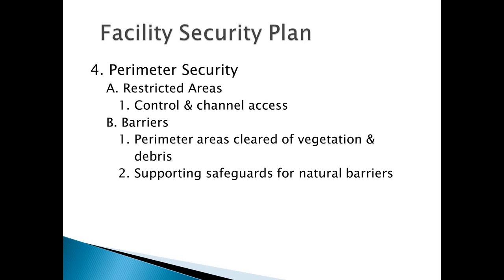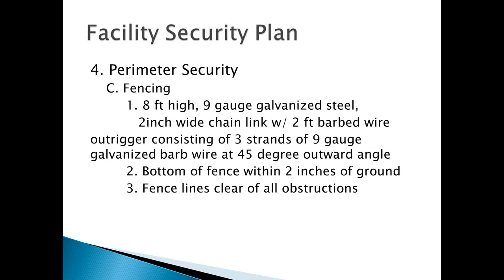Fencing: it should be eight feet high — typically a seven-foot fence with a one-foot top guard. The fence should be nine-gauge galvanized steel, two-inch wide chain link, with a two-foot barbed wire outrigger consisting of three strands of nine-gauge wire at a 45-degree outward or inward angle — or both — depending on which direction you want to stop traffic. The bottom of the fence has a nine-gauge wire running two inches above the ground to keep people from pulling the chain link out and creating an entryway underneath.